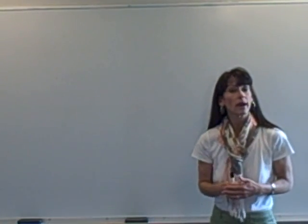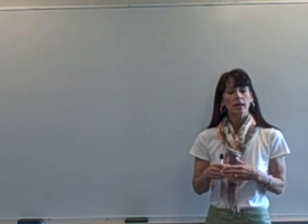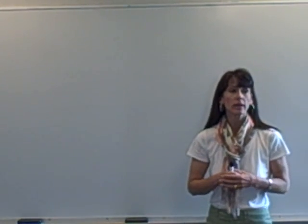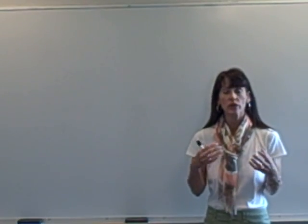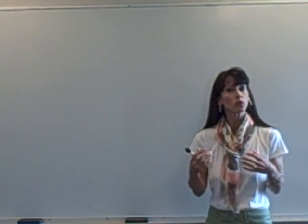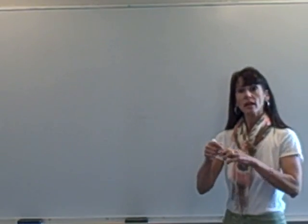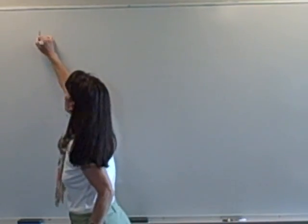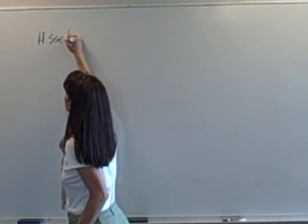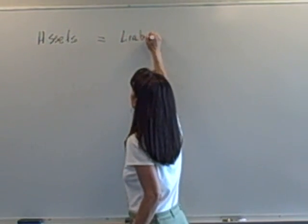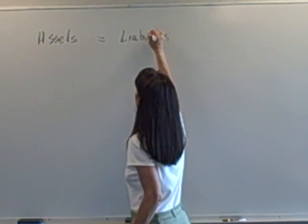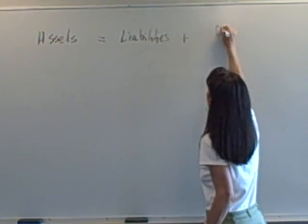Hi, today we're going to talk about the accounting equation. The accounting equation is used when a business is trying to keep track of all of its transactions that happen during the normal course of any day. So the accounting equation says that assets will always equal liabilities plus owner's equity.